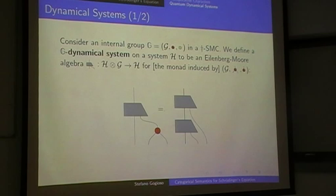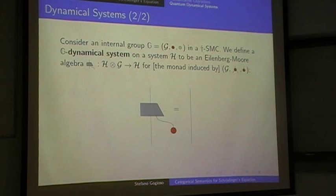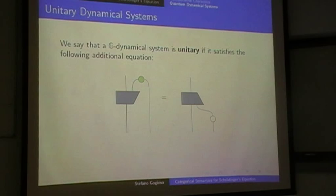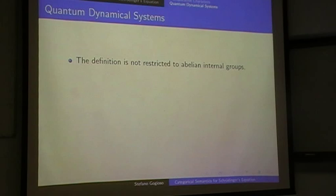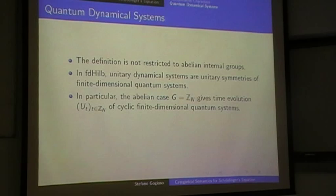We'll further ask for these to be unitary — i.e., to be green controlled unitaries, or equivalently to satisfy the equation which says that the action at the group inverse is just the adjoint. This definition is not restricted to abelian internal groups; it is a general definition. But in FD-Hilb for abelian internal groups and the cyclic case, it gives the usual families of unitaries generated by some unitary U — recovering the familiar notion of a finite cyclic quantum dynamical system.